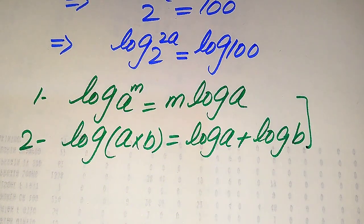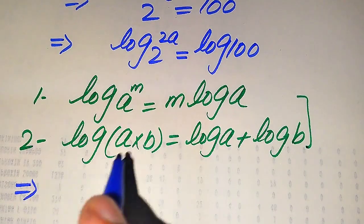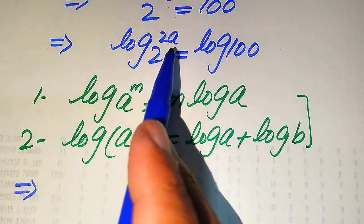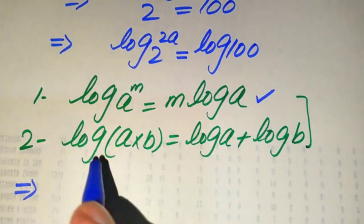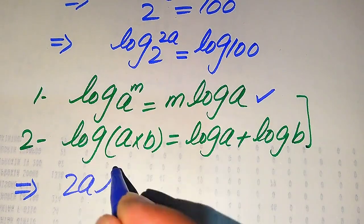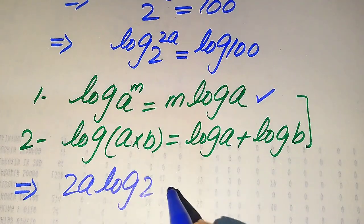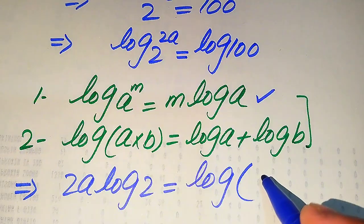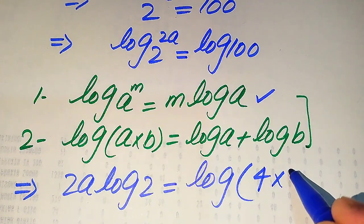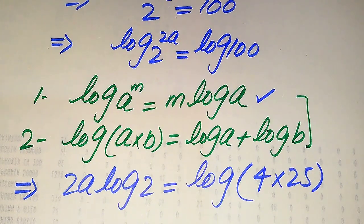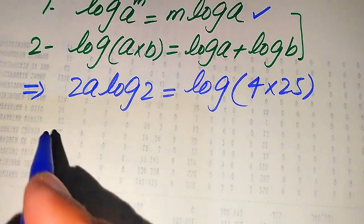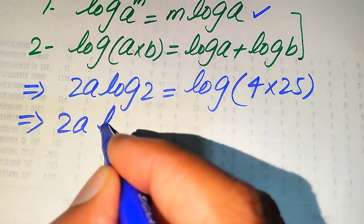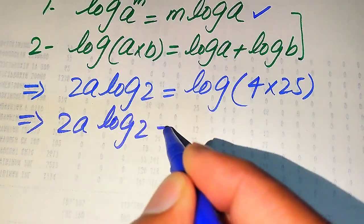First we apply the power rule to the left hand side. Since 2a is the exponent of 2, we move 2a to the front, giving us 2a times log 2 equals log of 100. We write 100 as 4 multiplied by 25, since 4 times 25 equals 100. So we have 2a times log 2 equals log of 4 times 25.